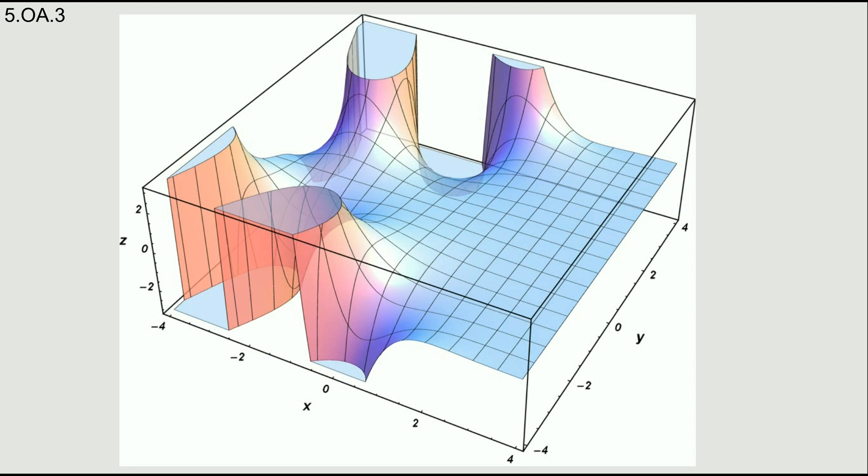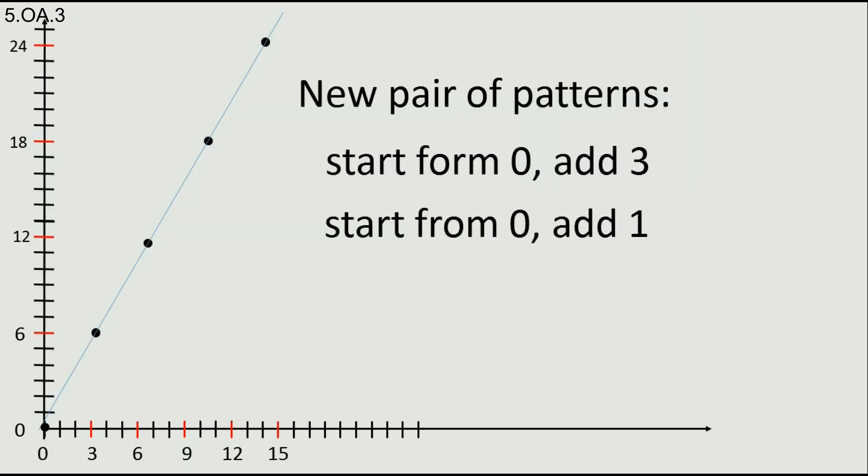But for the moment, let's stick with our line and try to understand it better. Let's draw a new set of patterns and see what line they make. For example, first pattern starts from 0, add 3. Second pattern starts from 0, add 1. For the first pattern, we have 0, 3, 6, 9, 12, 15. From the second pattern, we have numbers 0, 1, 2, 3, 4, 5, 6, 7.